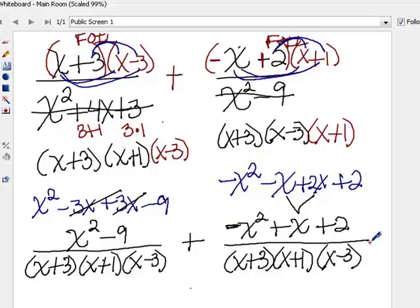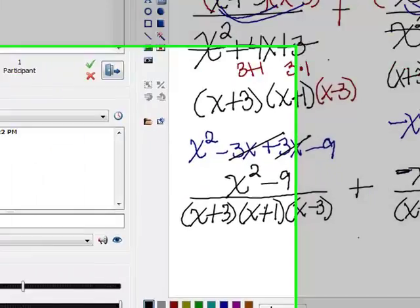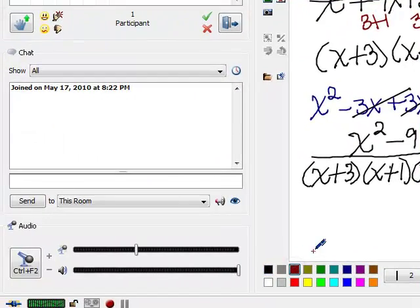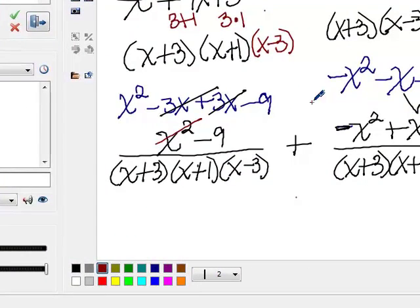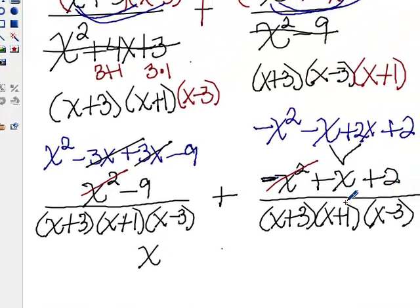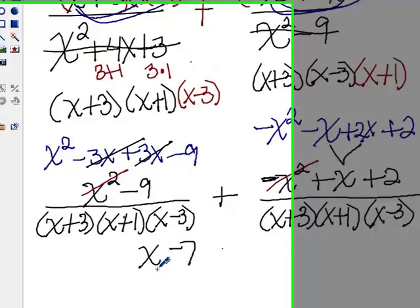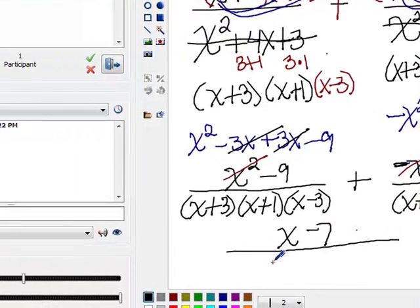Now our denominators match and we no longer have any multiplication in the numerators, so we can go ahead and combine like terms. And I notice right away that this positive x squared cancels with the negative x squared. So that just leaves me with an x. And then the negative nine and the two makes negative seven. So that's the numerator, and the denominator is all three factors down here.